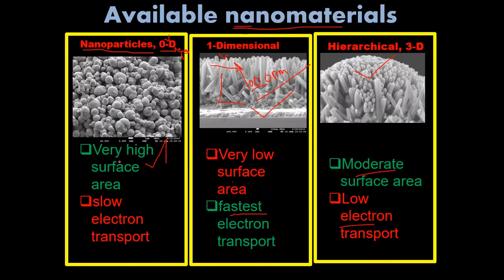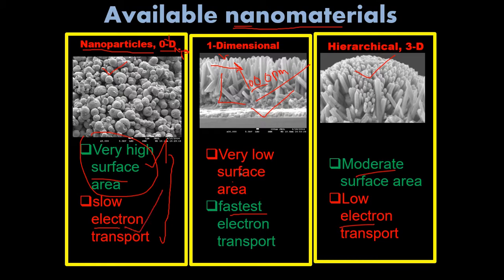The question is: what will be the future material? We define three kinds of material — one dimension, zero dimension, and three-dimensional hierarchical structure — and which material do we have to select? The two key parameters are surface area and electron transport. In each type, one property is an advantage and another is a disadvantage. The green indicates advantages while the red indicates disadvantages.